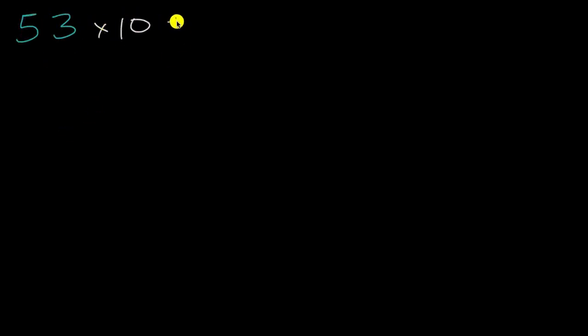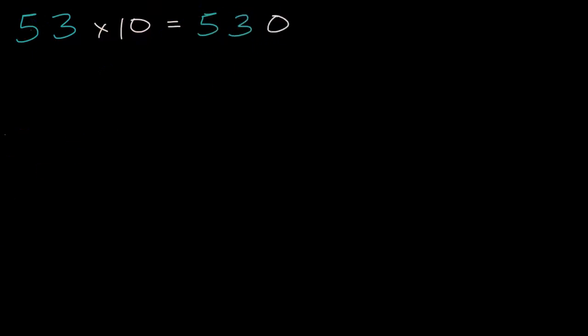We've already learned that when we multiply by 10 — let's say we took the number 53 and multiplied it by 10 — it has the effect of shifting all the digits one place to the left. So this should be a review for you, but this was going to be 530. What used to be in the tens place has been shifted to the hundreds place, and what used to be in the ones place has been shifted to the tens place.